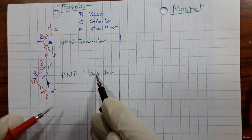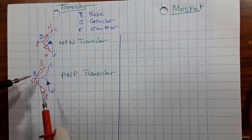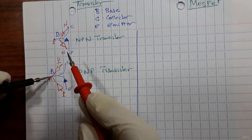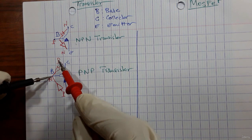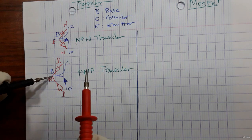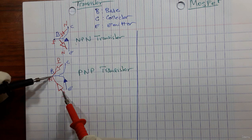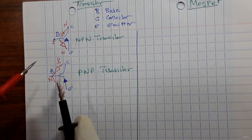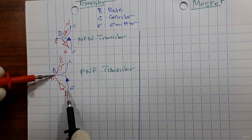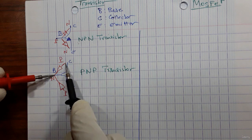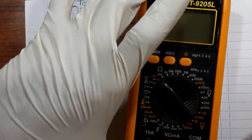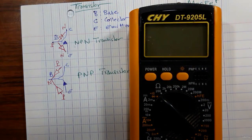For a PNP transistor: if we put the black probe on the base and the red probe on the collector, we should get a reading in the multimeter. Similarly when the red probe is on the emitter. If we reverse the probes — red probe on the base and black probe on the collector — we should get no reading. Let's check this out now using the multimeter.